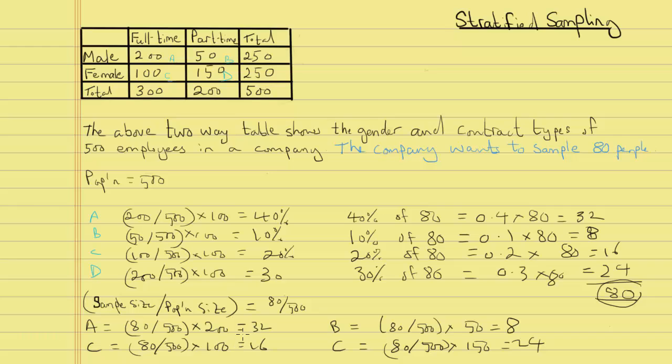These are our sample for each group. From the males full-time group we need a sample of 32. From males part-time we need 8. From females full-time we need 16 people. And for the final group we need to sample 24 people.